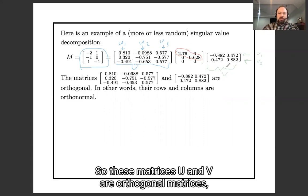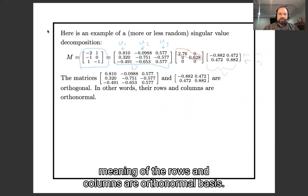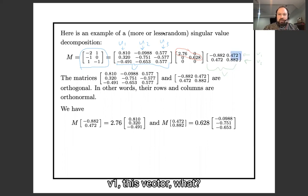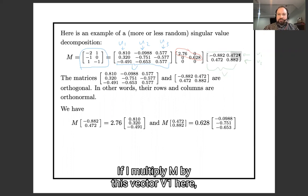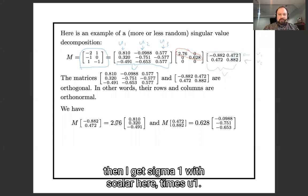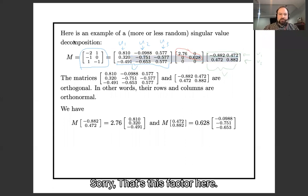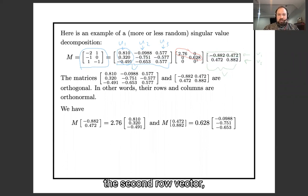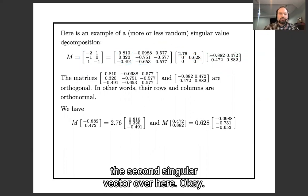So these matrices U and V are orthogonal matrices meaning that the rows and columns are orthonormal bases. And if I multiply M times this first vector v1 here, then I get σ1 this scalar here times u1 that's this vector here. And the same thing with if I multiply M times v2, the second row vector, then I get the second singular value times the second singular vector over here.